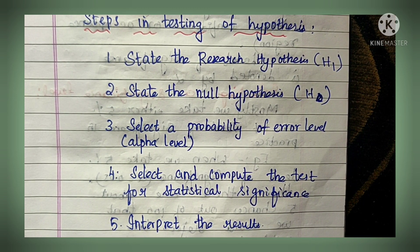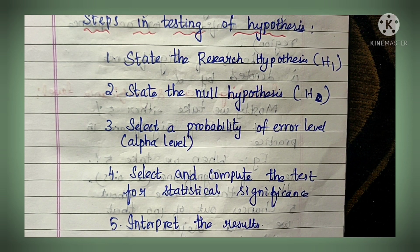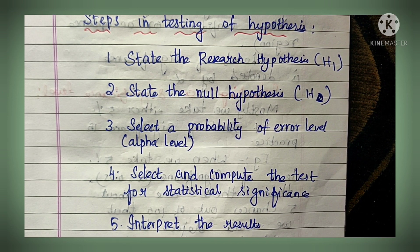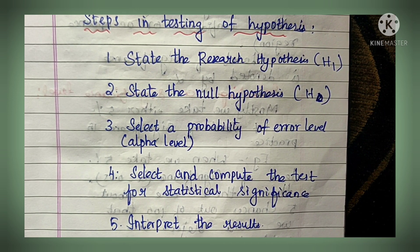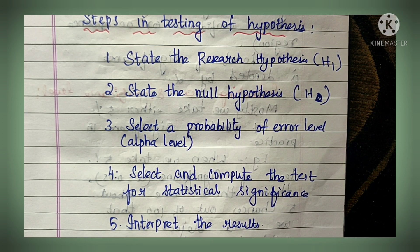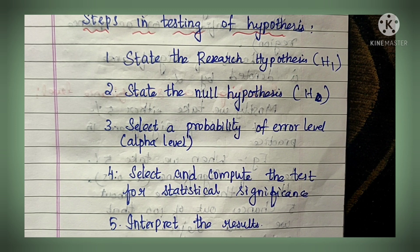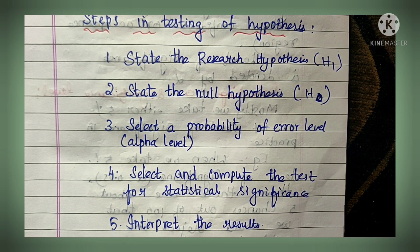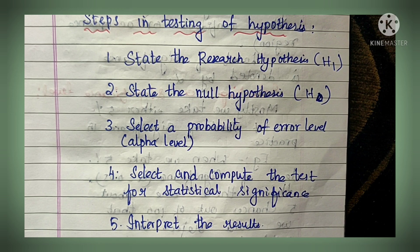After setting the alpha level, you have to select and compute the test statistic for statistical significance. The test statistic can be either a parametric test or a non-parametric test. Parametric tests include t-test, z-test, f-test, and non-parametric tests include chi-square test and others. You also identify the degree of freedom, and with the calculated result you interpret the results.